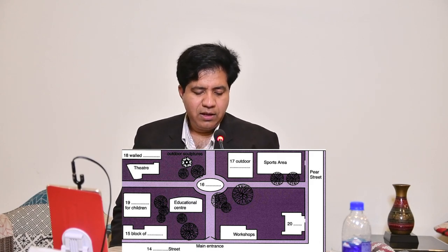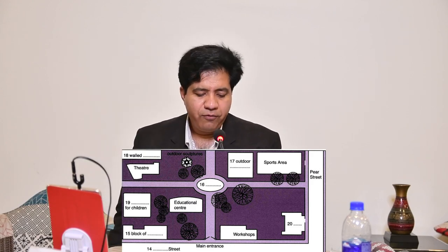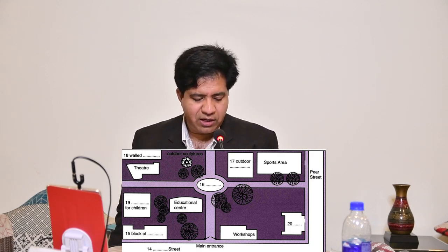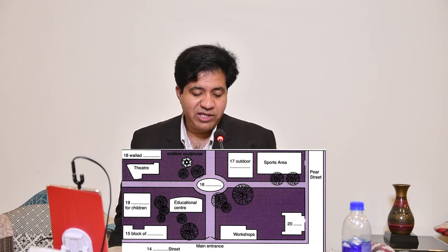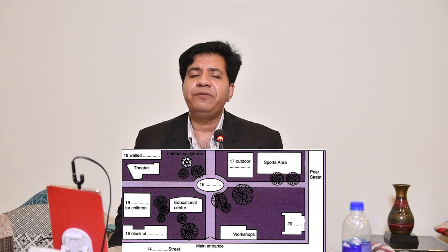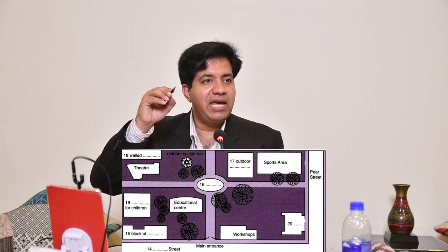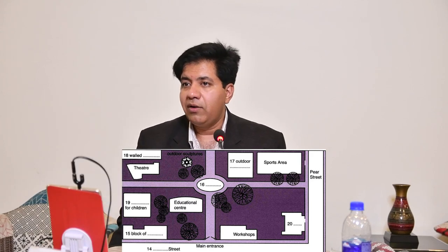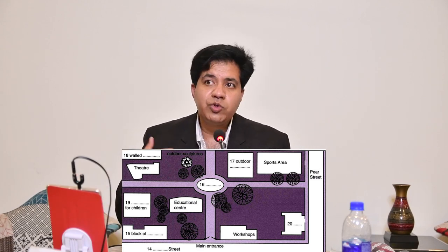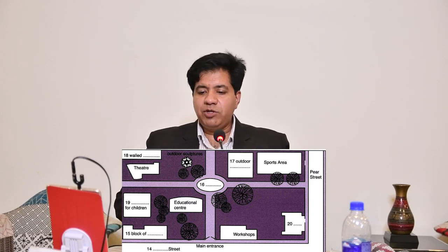Question number 18: flower garden. Question number 19: play area. They mentioned play area for children — 'for children' is already written, so 'play area' will be the answer. Now they have further simplified IELTS — sometimes they give you these words as A, B, C, D and you just write the letter. But sometimes it's the old version, so you should be prepared both ways, from book 1 to book 16. Question number 20 is cafe.